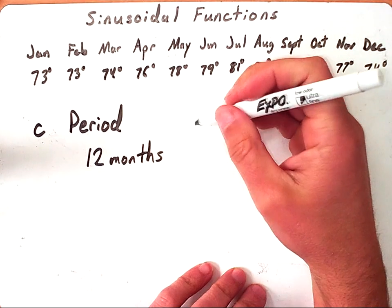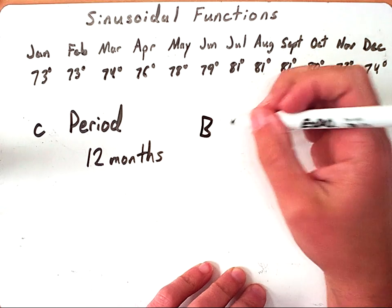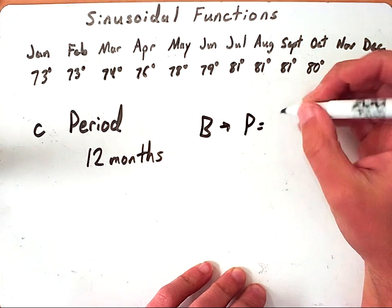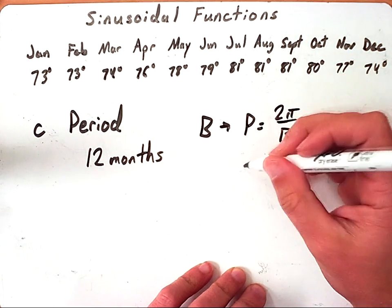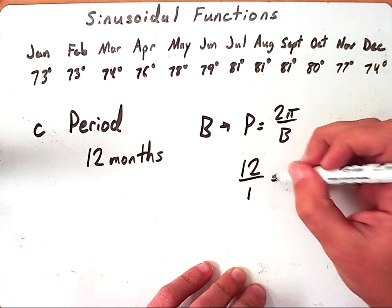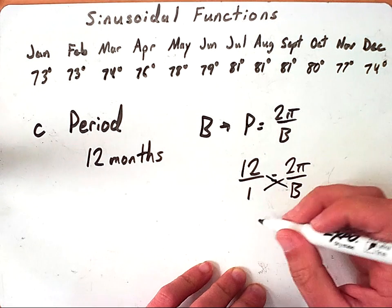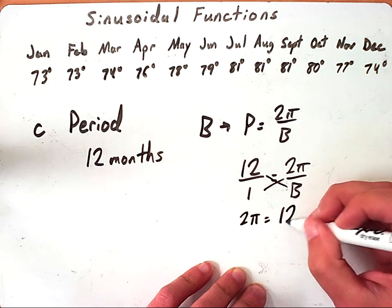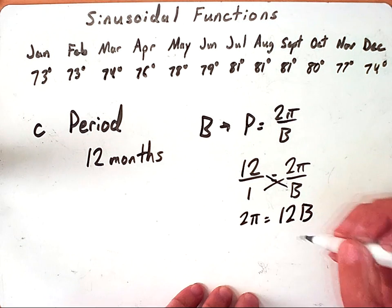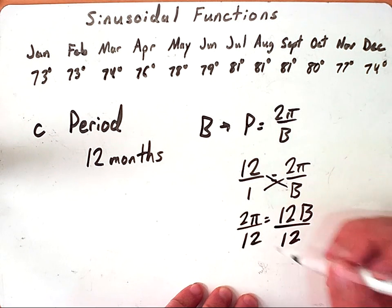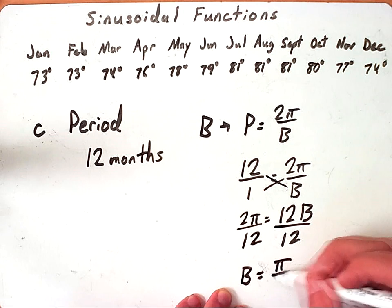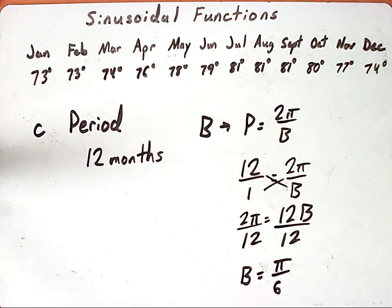This is true for most things dealing with weather or time, hours of daylight, rainfall - typically they're on a 12 month cycle, so your period would be 12 months. Which means later on whenever we write the equation we need to solve for B. Remember the period equals 2π over B. So if I want to solve for B, I'll have 12 over 1 equals 2π over B. Cross multiply which would give me 2π equals 12B, and so I'll divide both sides by 12. So I'm going to get B equals π over 6.